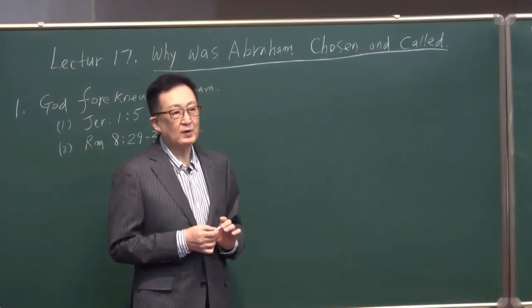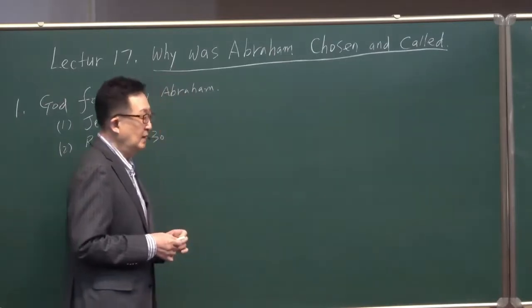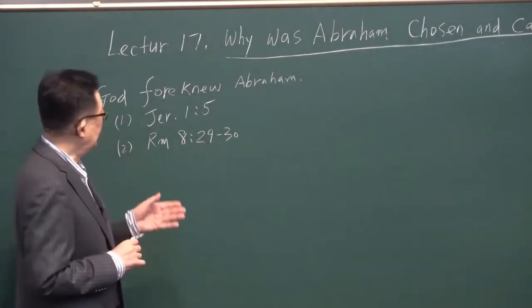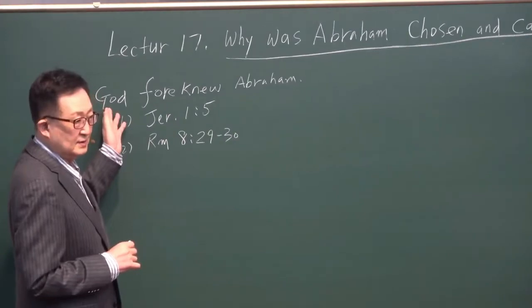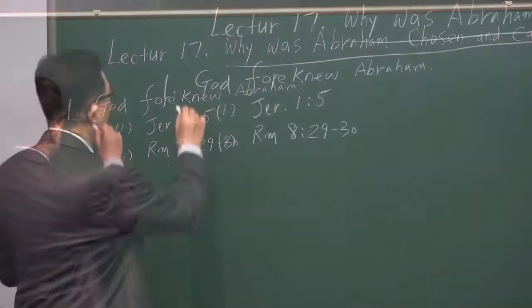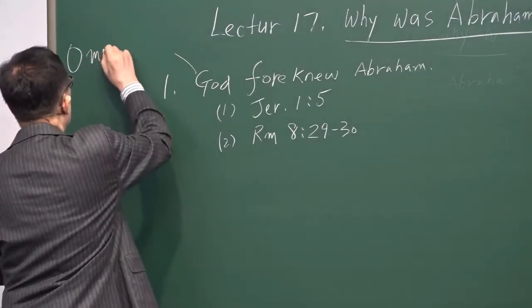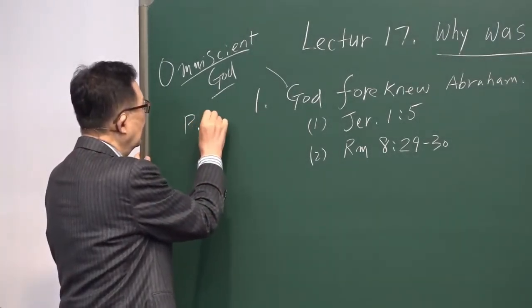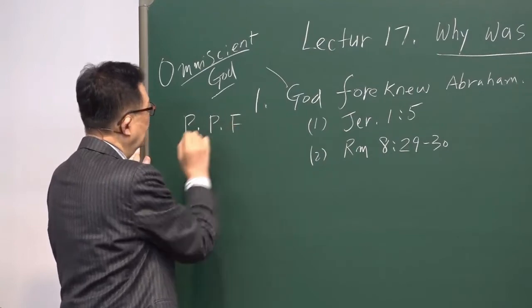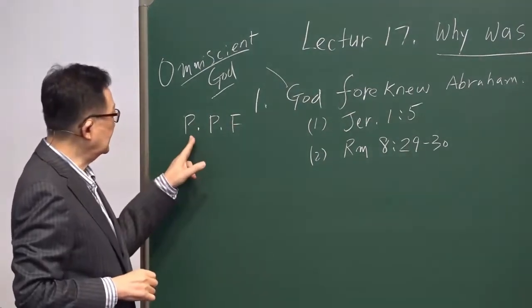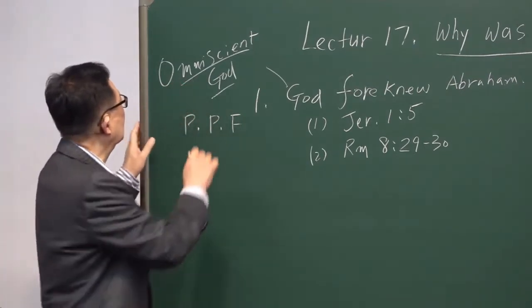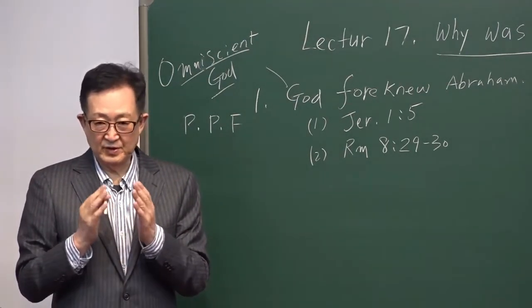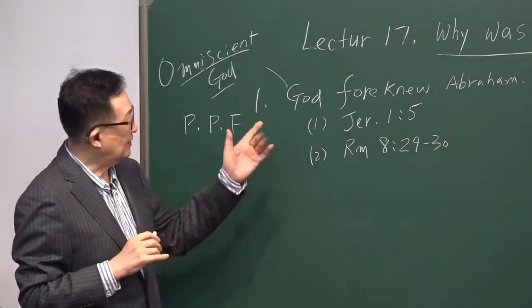That question would be everyone's question. First, the answer you should deal with is this: God, who is omniscient God, He knows everything. He knows past, He knows present, He knows future. That is called omniscient God. With that connotation, implication in your mind, let's look at Abraham.